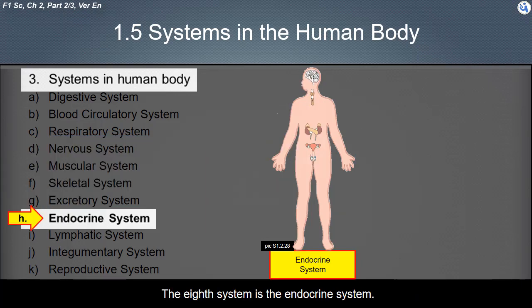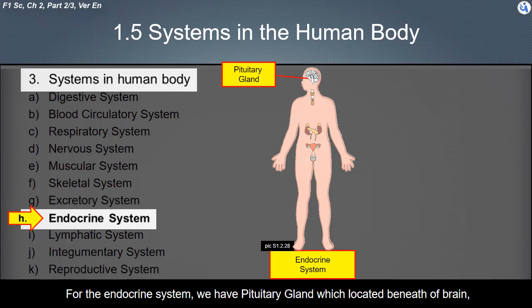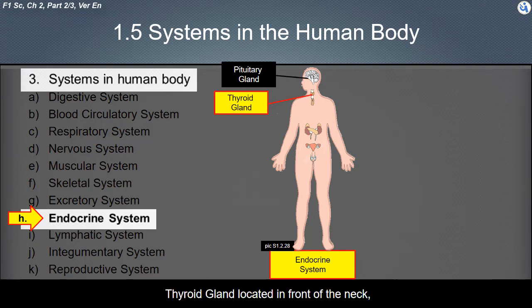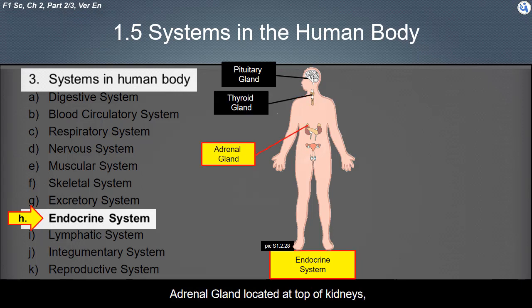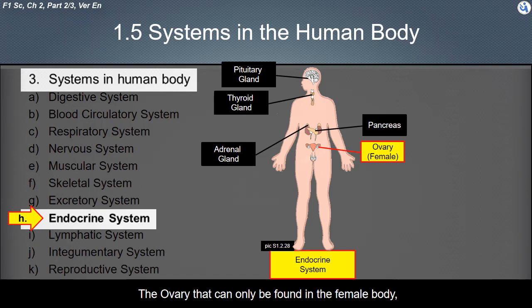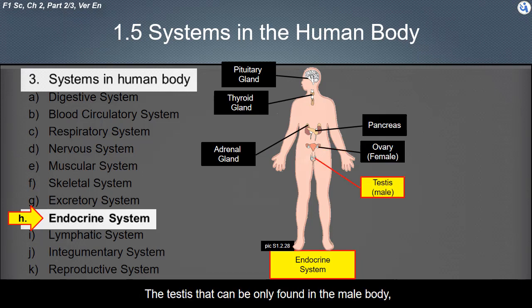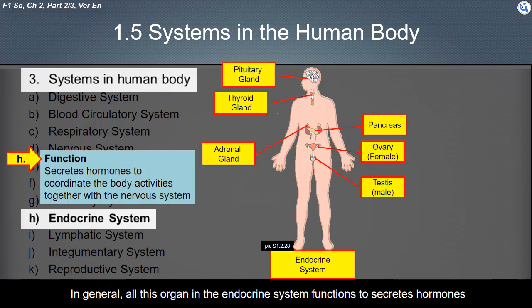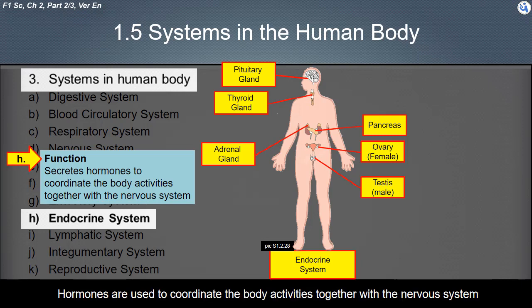The eighth system is the endocrine system. It includes the pituitary gland located beneath the brain, the thyroid gland located in front of the neck, the adrenal gland located at the top of the kidneys, the pancreas located behind the stomach, the ovary found only in the female body, and the testis found only in the male body. All these organs in the endocrine system function to secrete hormones, which are used to coordinate body activities together with the nervous system.